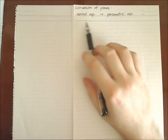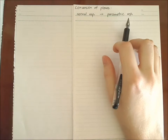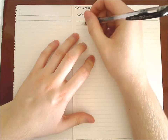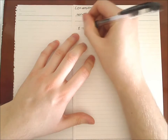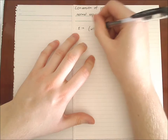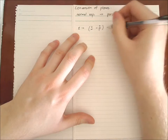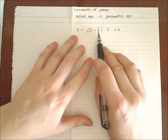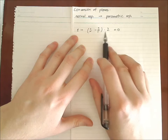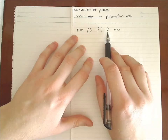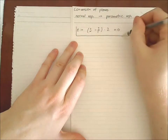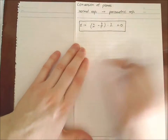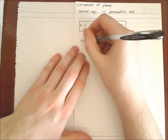I'm going to show you how to convert planes from normal representation to parametric representation using an example. First of all, we need a plane given in the normal representation. The normal representation means our plane looks something like this: we have (x minus p) — where p is some sort of support vector — times n, where n is the normal vector. That is the structure of a normal representation.